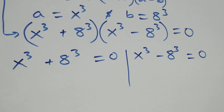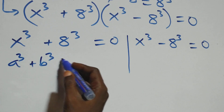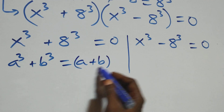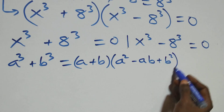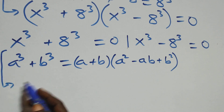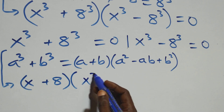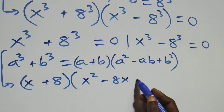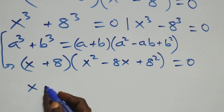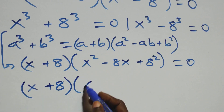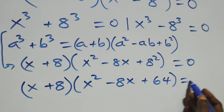Solving the first case, we use the identity a³ + b³ = (a + b)(a² - ab + b²). What we have becomes (x + 8)(x² - 8x + 8²) equals to 0, which is the same as (x + 8)(x² - 8x + 64) equals to 0.